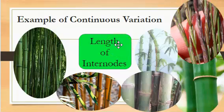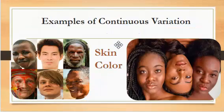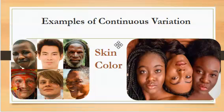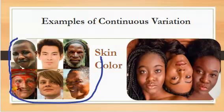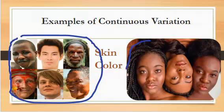Let's look at a few examples of continuous variation. We have skin color — you can see them here and there are others you see in your environment. We have these ladies here showing quite a wide range of skin colors.